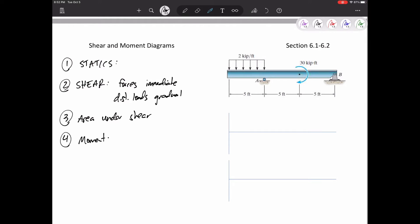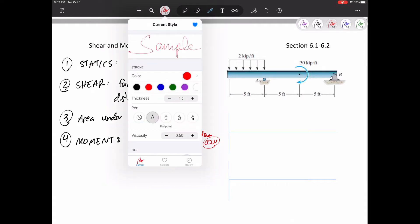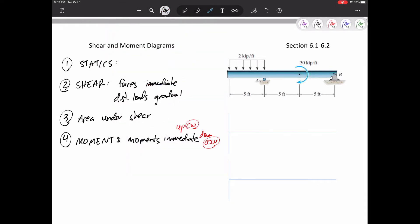Then I calculate the area under the shear, thinking about the positive area is above the axis, negative area is below the axis. And then I go to my moment diagram. For my moment diagram, I'm getting pushed up and down immediately by concentrated moments. Clockwise moments push me up, counterclockwise moments push me down. But what's really also changing in the moment diagram is the area under the shear moves my moment diagram up and down, but not immediately, more gradually.